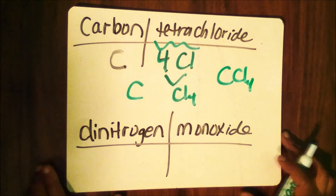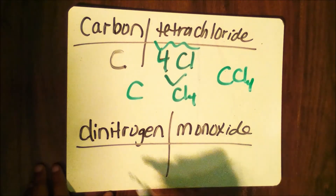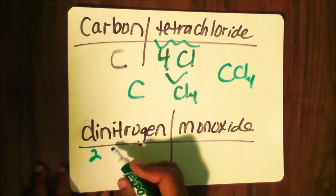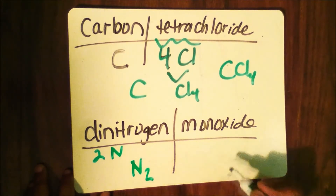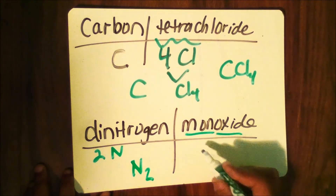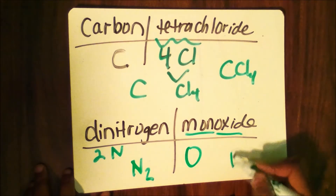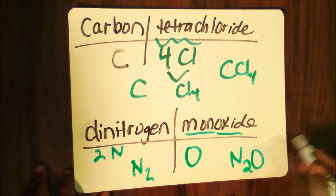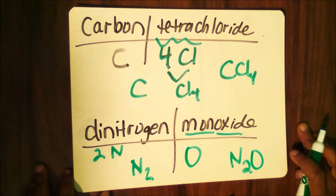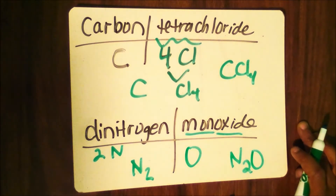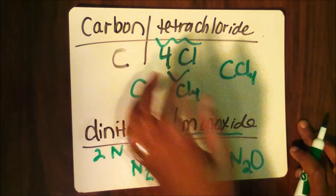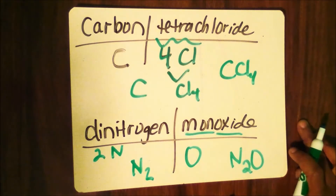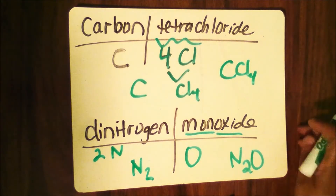The next example is dinitrogen monoxide. Di means two — the symbol for nitrogen is N, rewritten as N₂. Mono means one — the symbol for oxide is O. So the final formula is N₂O. The reason we say monoxide for the second name is because mono means one. You do not say mono for the first name — we didn't say monocarbon tetrachloride, just carbon tetrachloride. Mono is only used for the second name.